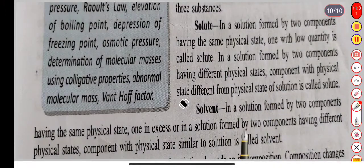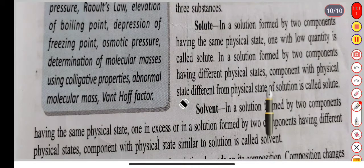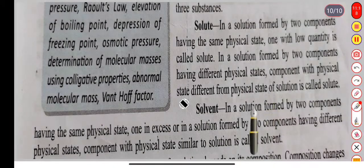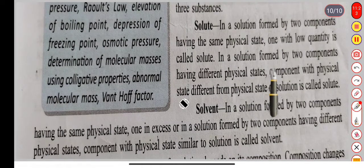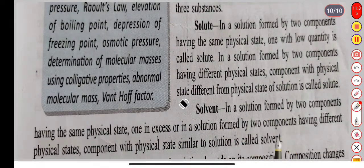Now let's talk about solvent. In a solution formed by two components having the same physical state, the one in excess is called the solvent — it is just the opposite of solute. If we talk about solvent, the physical state is the same but the component present in excess is the solvent. In a solution formed by two components having different physical states, the component with a physical state similar to that of the solution is called solvent.